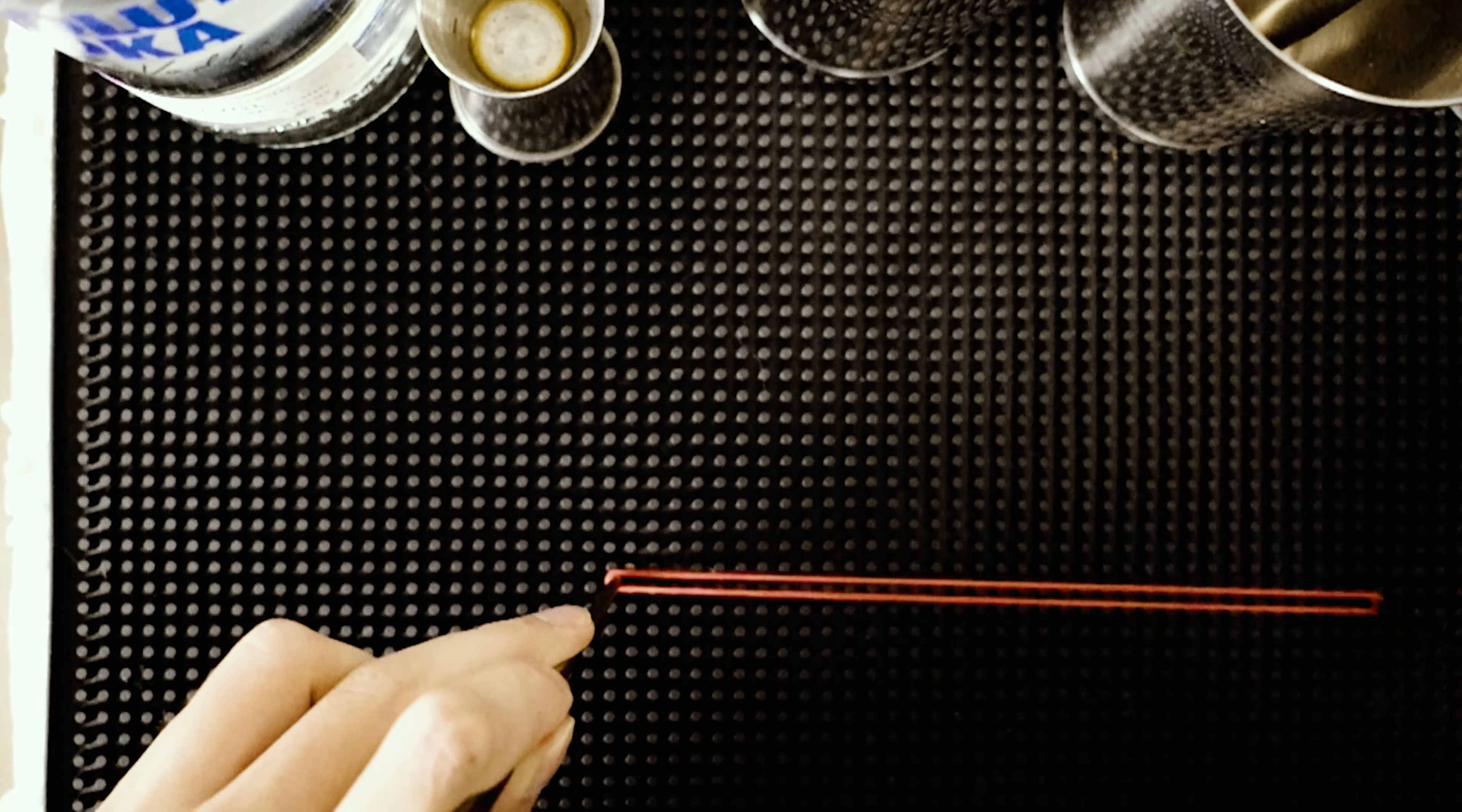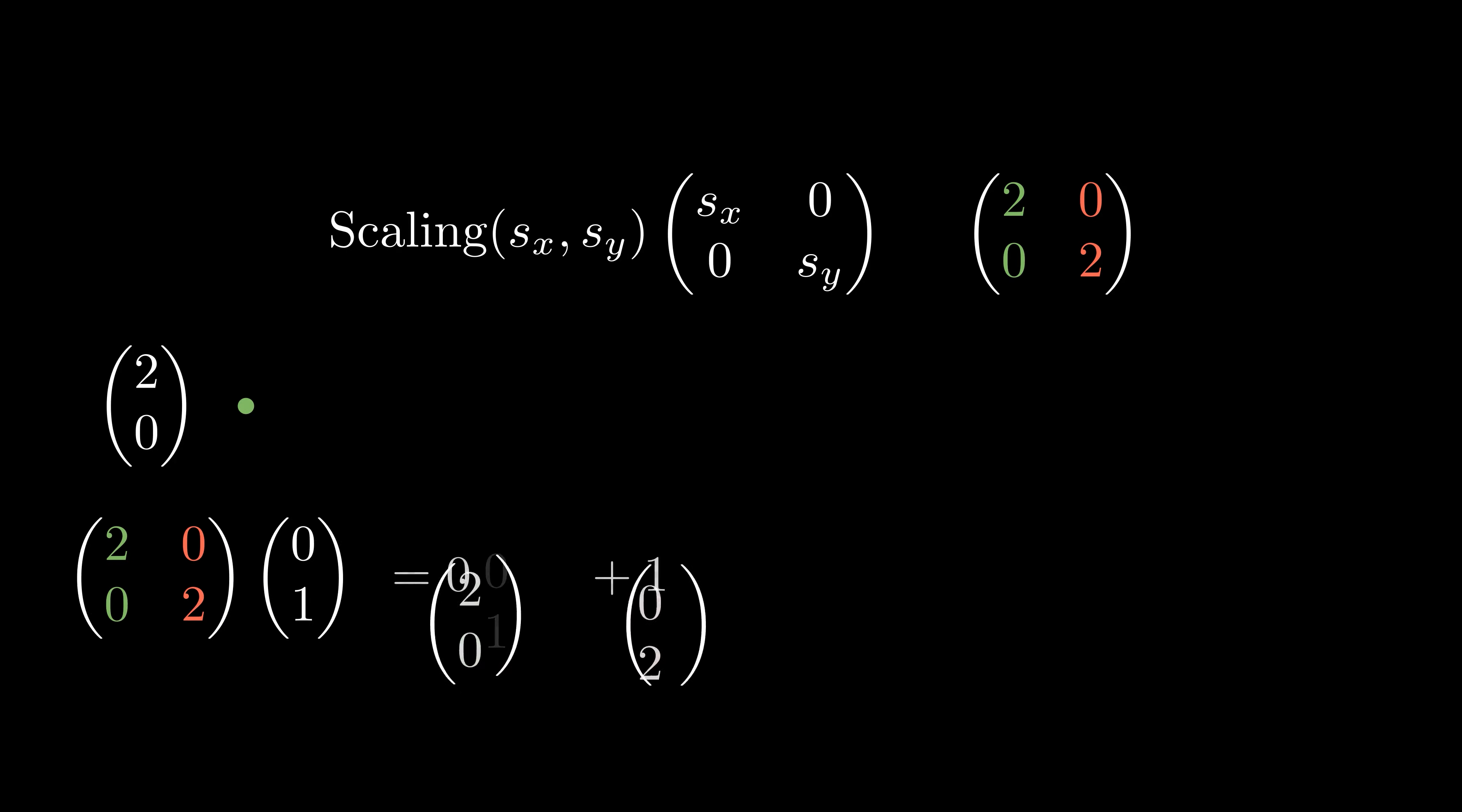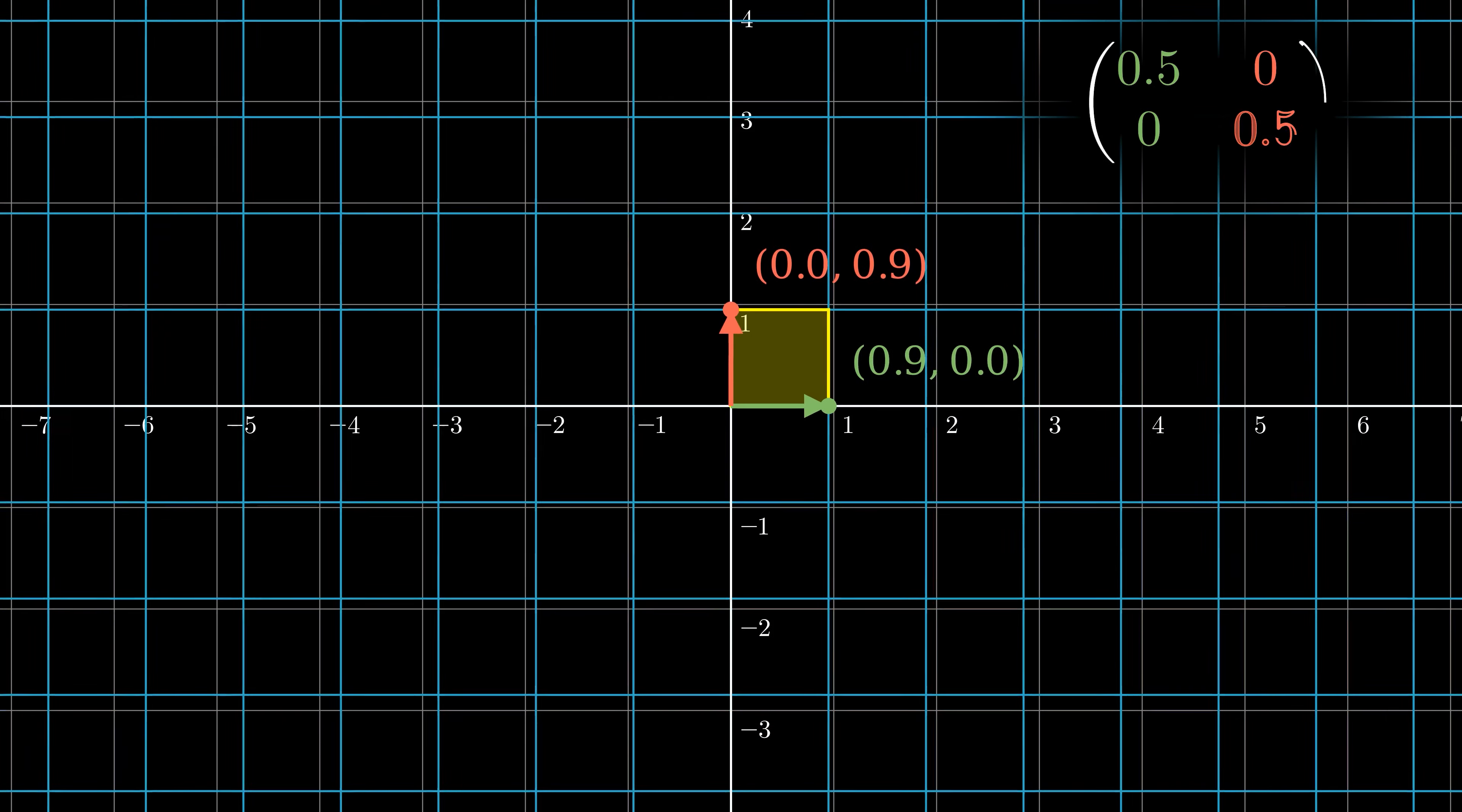If I want to scale my object twice bigger in the x-axis and also twice bigger along the y-axis, then the scaling matrix is this: the x-axis [1,0] got stretched to [2,0], the y-axis [0,1] got stretched to [0,2]. So this is the destination where the axes landed. Here it goes, here's scaling twice bigger.